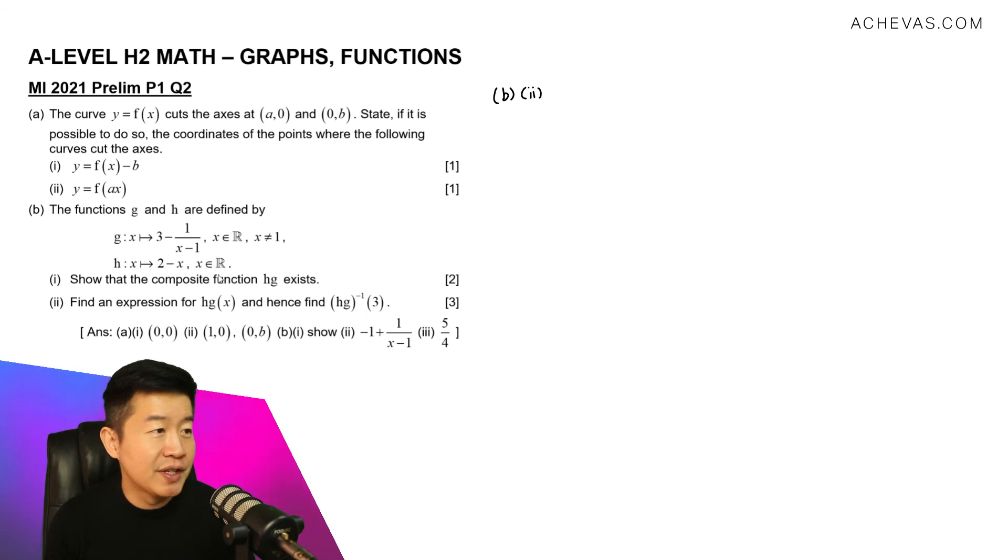B part 2. Let's first try to find the expression for hg. So for hg, I'm going to be putting g into h. So h is this. So putting g into h is going to be replacing the x that is here by the entire expression of g. So here we have 3 minus 1 over (x-1).